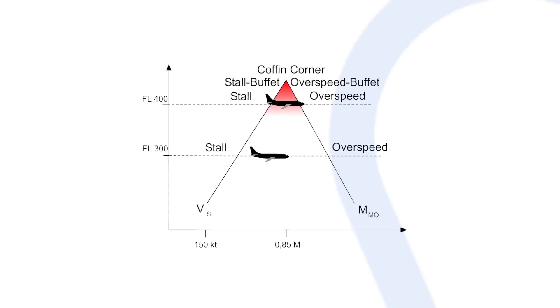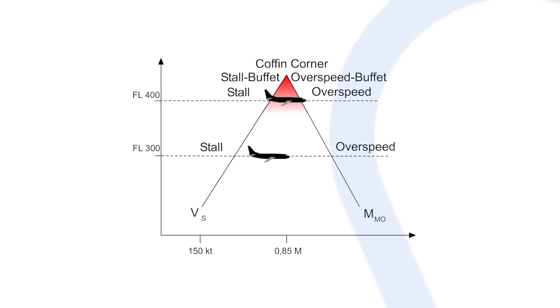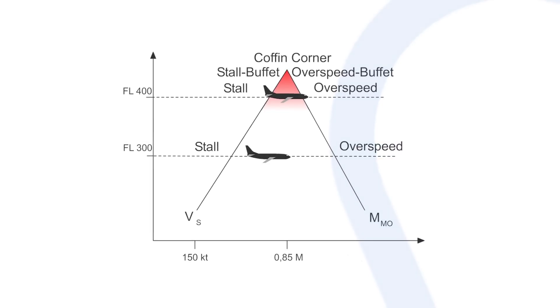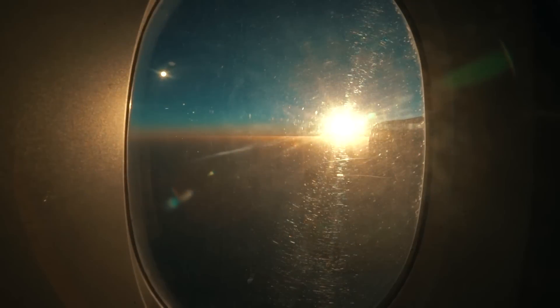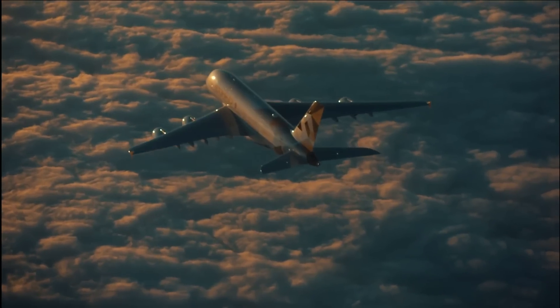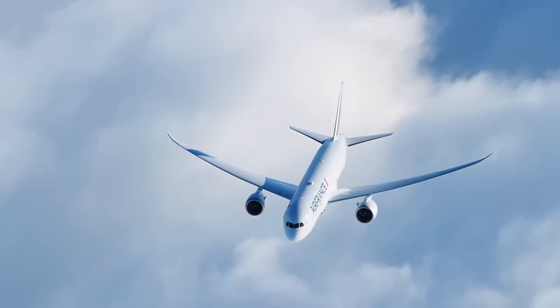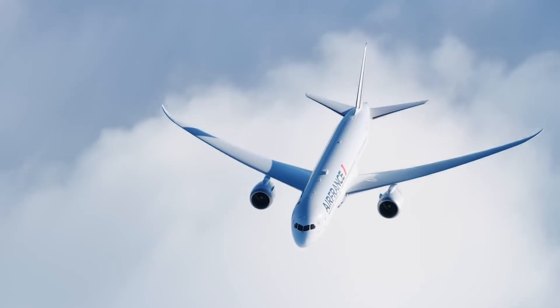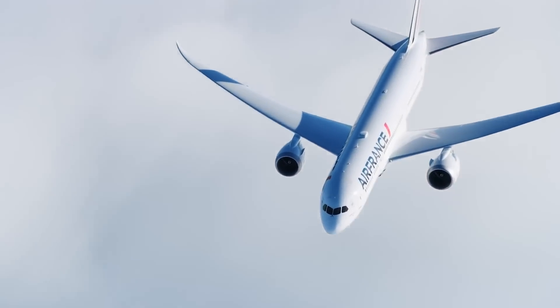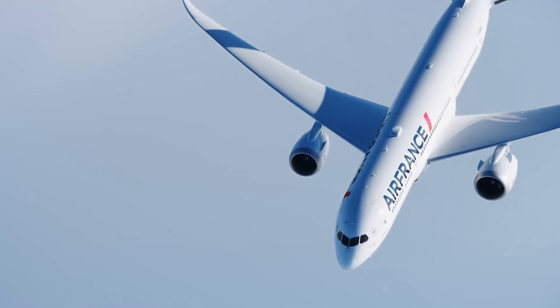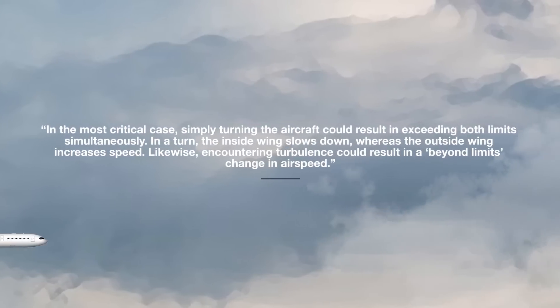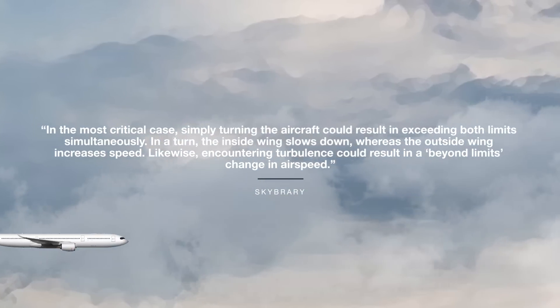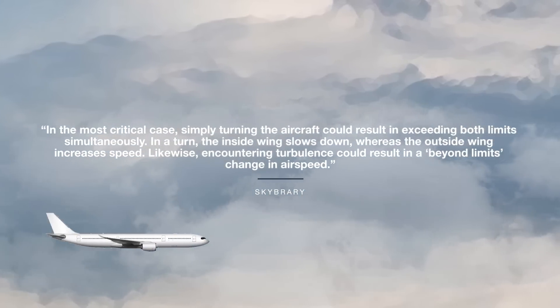More morbidly, it also refers to the danger of death that can arise as a result. When an aircraft is in the coffin corner, it can be more difficult to maintain stable flight. This is because reducing speed can cause the plane to stall, whereas increasing speed can reduce its lift. Even the slightest of movements can prove dangerous, as Skybree explains. In the most critical case, simply turning the aircraft could result in exceeding both limits simultaneously.